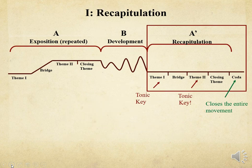The recapitulation is the psychological climax of the sonata allegro scheme. It begins with a double return of the home key and the first theme, providing a sense of unity and relief after the events of the development. The bridge also returns, this time without modulating, and leads to the second theme, which is now presented in the tonic key. This is followed by a closing section, concluding the piece with a cadence in the home key.